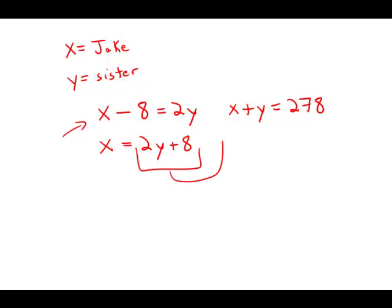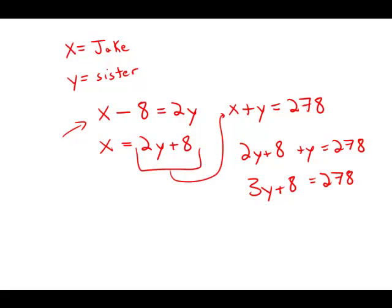Now I'm going to plug this in for x in the second equation. I'm going to get 2y plus 8 plus y equals 278. Or, 3y plus 8 equals 278.